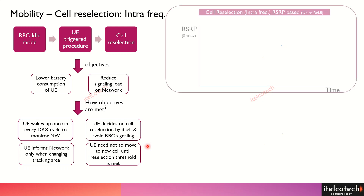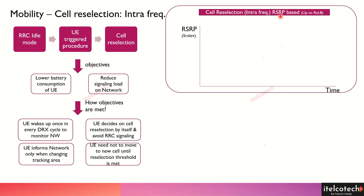Here in this case, what we are describing is an example of cell reselection based on RSRP. So we are talking about only the signal strength here.